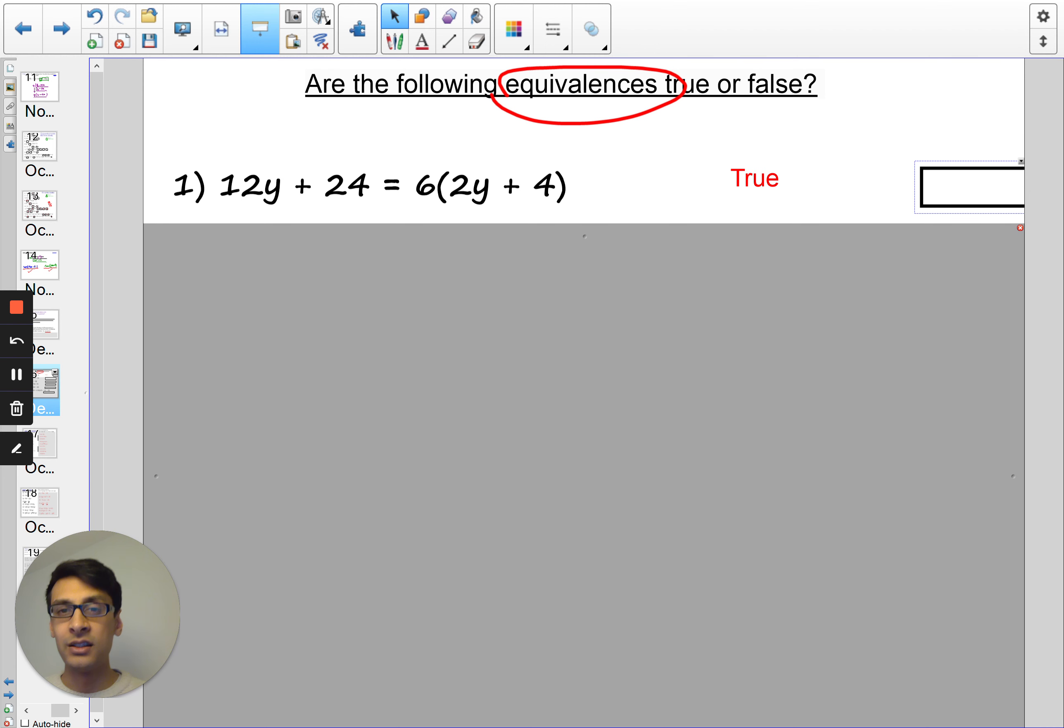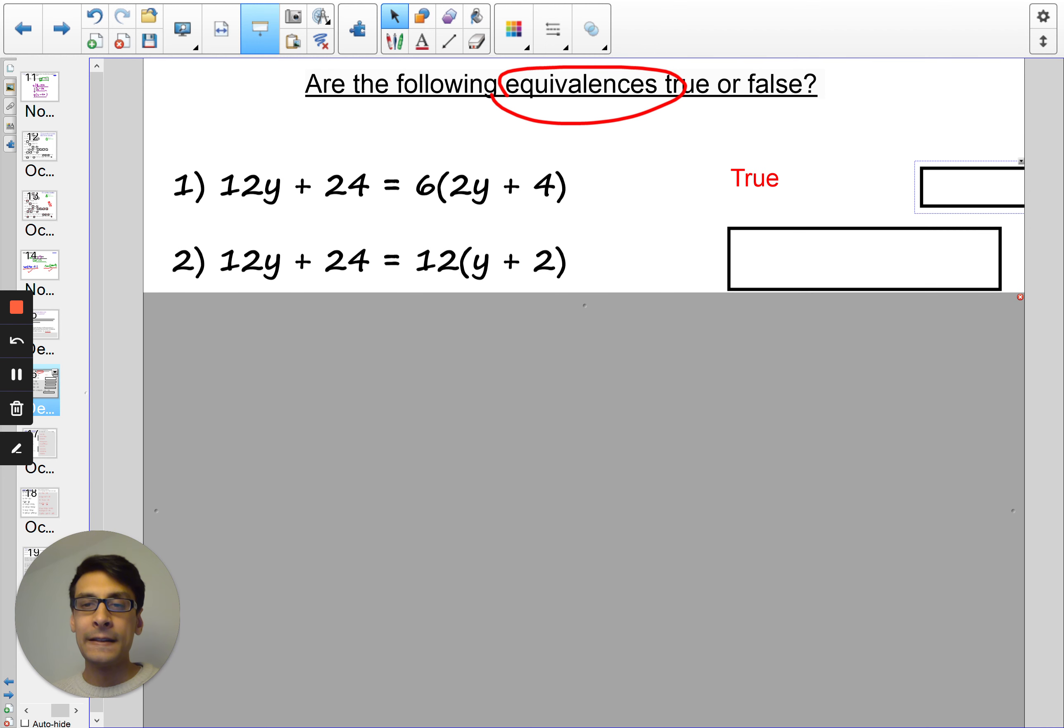So knowing that, let's try question 2. Pause the video if you need more time. Okay. So the answer for this is going to be 12y plus 24. That is true. And it is fully factorised because 12 is the highest common factor.